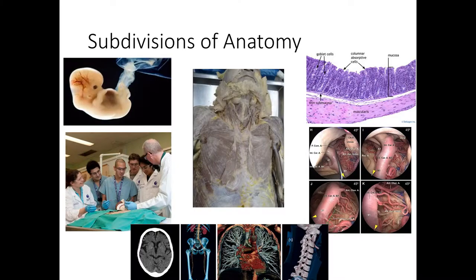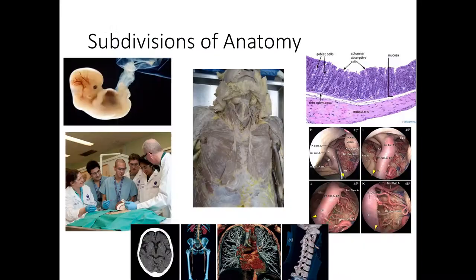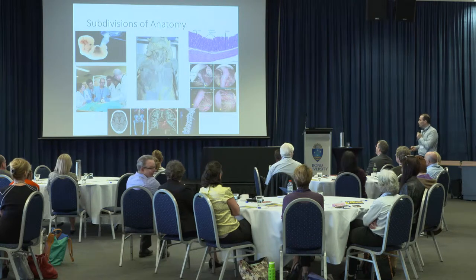Anatomy has a lot of subdivisions, such as embryologic anatomy — a study of embryos; gross anatomy, when you study with cadaveric specimens; microscopic anatomy, which is the histology of slides; surgical anatomy, a study of anatomy during surgical interventions; radiologic anatomy using medical imaging modalities; and the last one is clinical anatomy, which is quite useful in the clinical field.